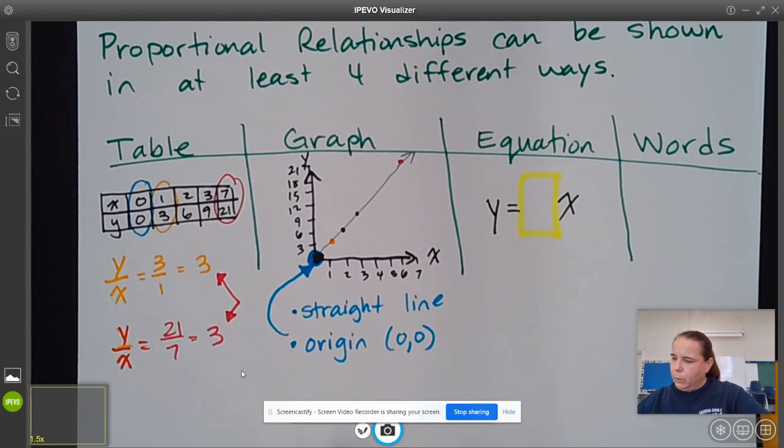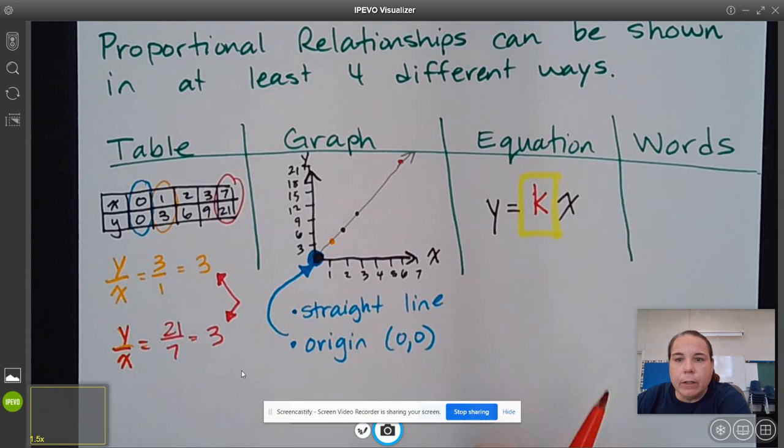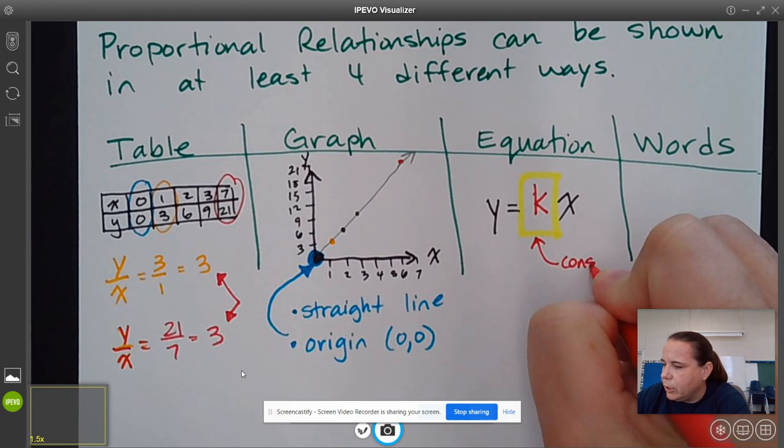When you have a proportional relationship, you're going to have y equals something times x. Well, that something is going to be your k. So this is the constant of proportionality.